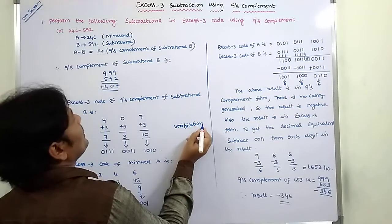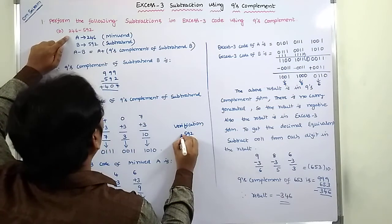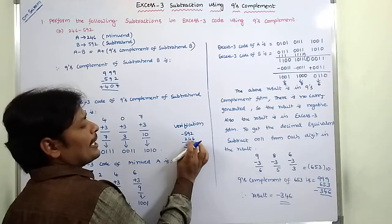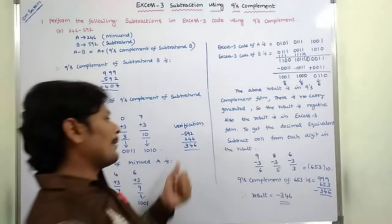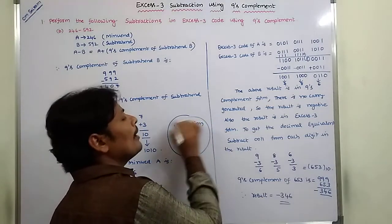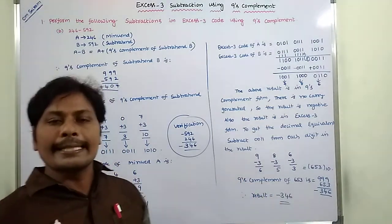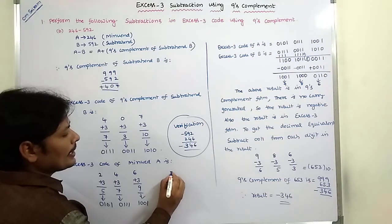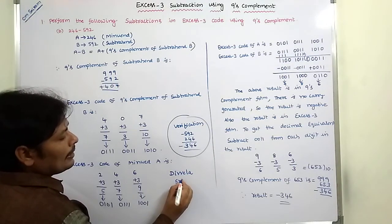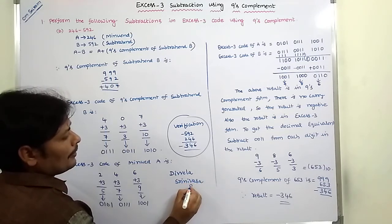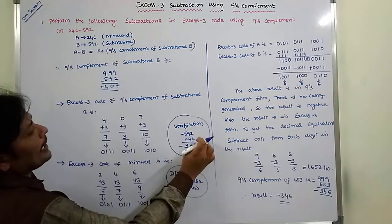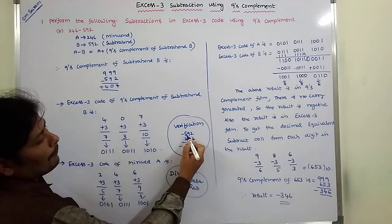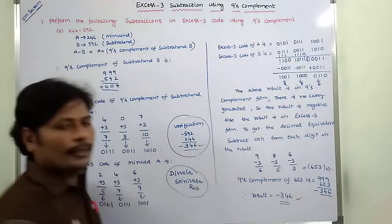Verification: 246 minus 592. We compute: 12 minus 6 is 6, 8 minus 4 is 4, 5 minus 2 is 3, so 246 minus 592 gives minus 346. We are getting the same result, so our answer is correct. Thank you for watching this video. If you like this video, please share it and subscribe to my channel.